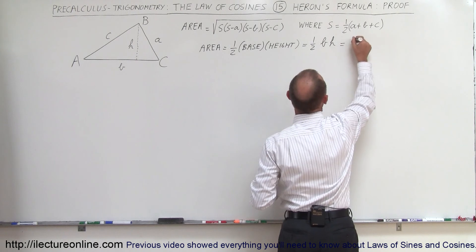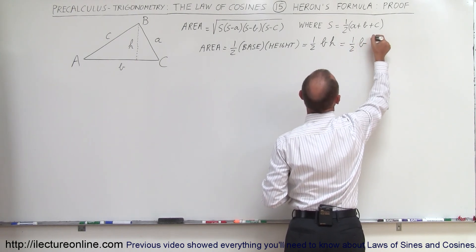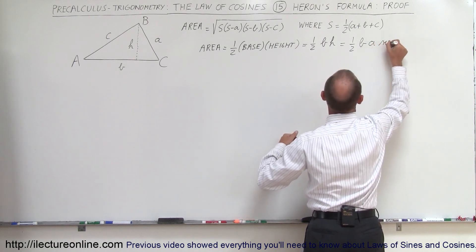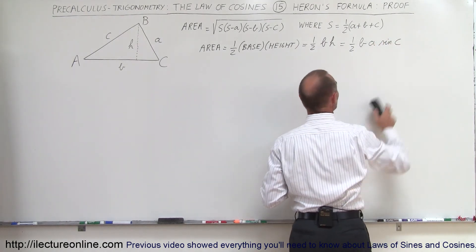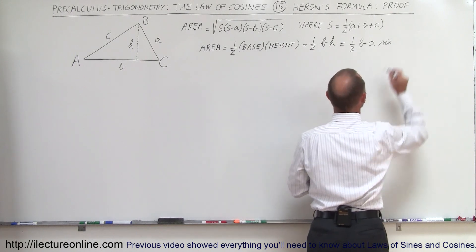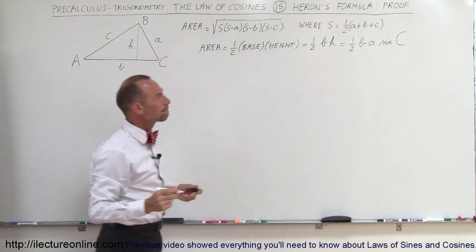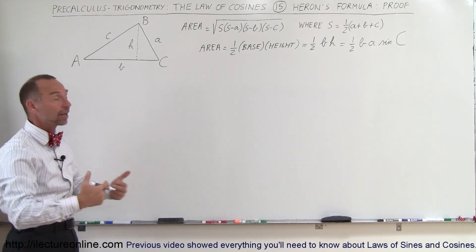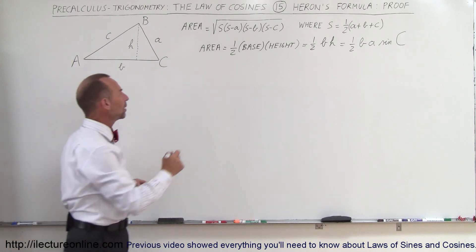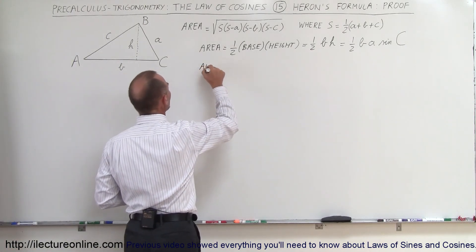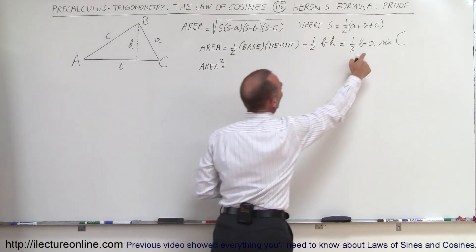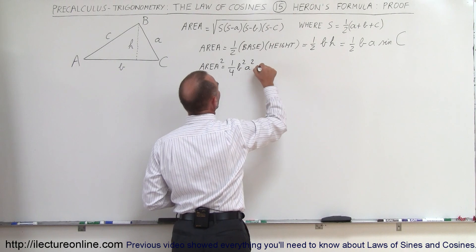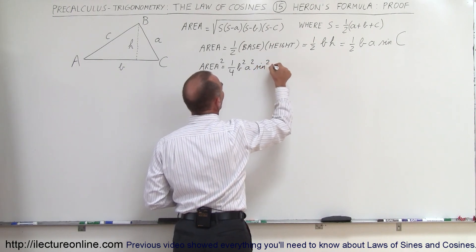So the area can be written as one-half the base times h, where h equals a times the sine of c. Now we're going to square both sides — that's the beginning of the proof. Area squared is equal to one-fourth b squared a squared times the sine squared of c.